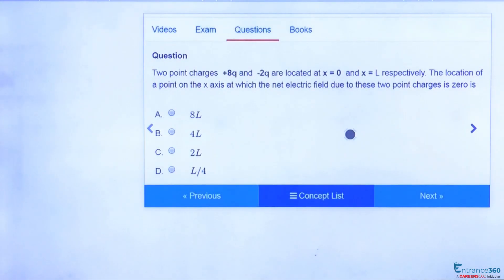Hello students, this is a direct formula-based question asked in JEE Main 2005. The question says that we have two point charges, 8q coulomb and minus 2q coulomb.